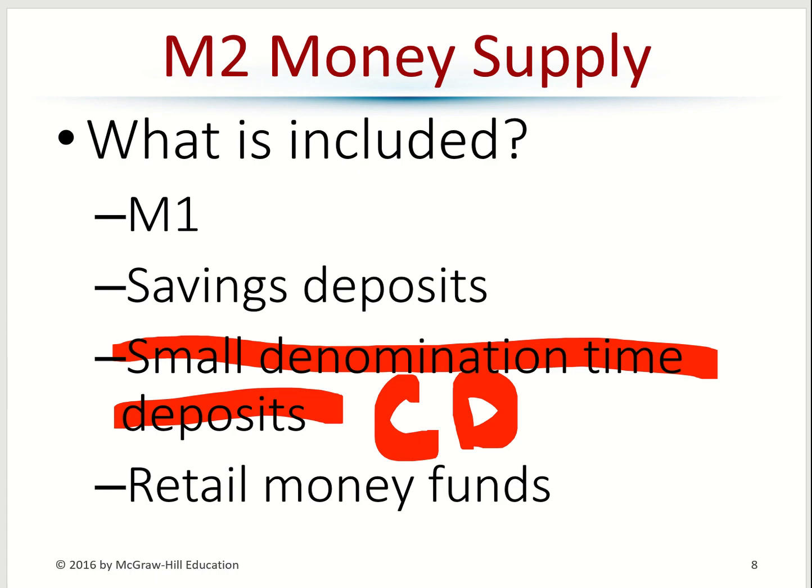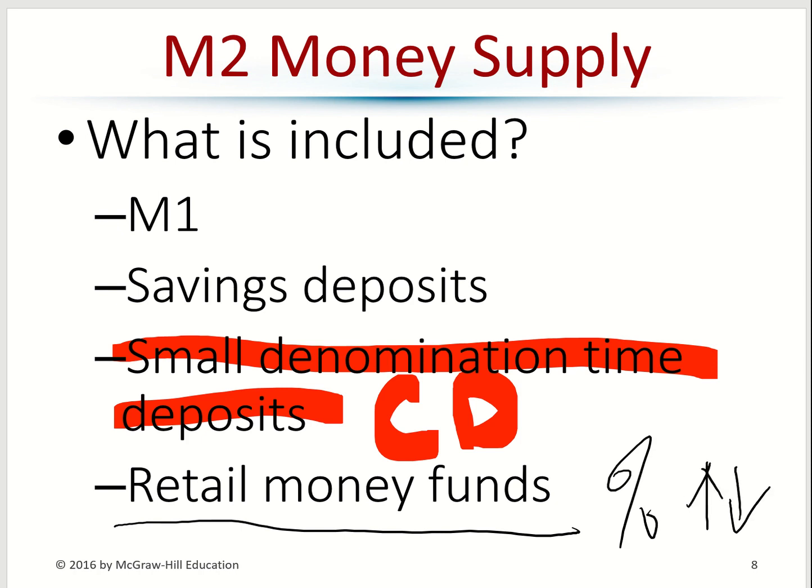The retail money market mutual fund is very popular now. If you go to most banks today, they will advertise a money market mutual fund and its interest rate. The advantage of a money market mutual fund is that the interest rate is floating — it increases or decreases depending on the market interest rate.